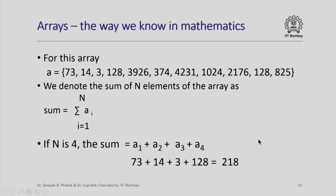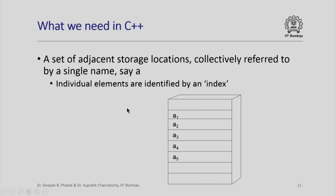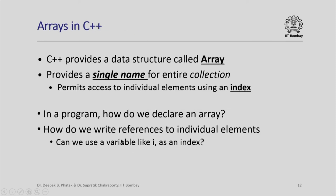What we need in C therefore is if we can have adjacent memory locations allocated not to different variables but allocated to different elements of an array, and all the elements together are collectively referred to by a single name, say A. So an individual element can be identified by an index like 1, 2, 3, 4, 5. In short, we look for such a facility. There are indeed arrays in C++, a structure which provides a single name for entire collection and it permits us to access individual elements using an index. In a program, how do we declare an array? How do we write references to individual elements? Can we use a variable like i as an index? These are the questions that we shall see in the next session.